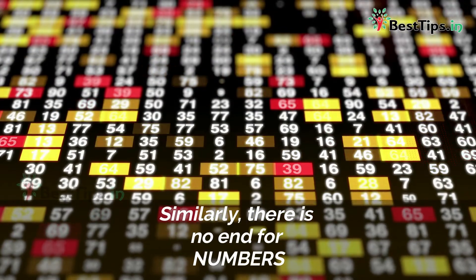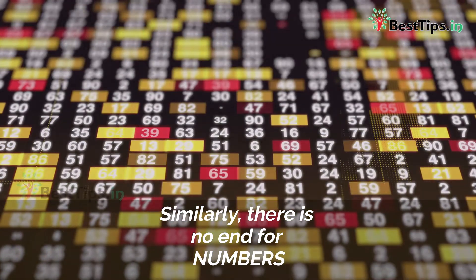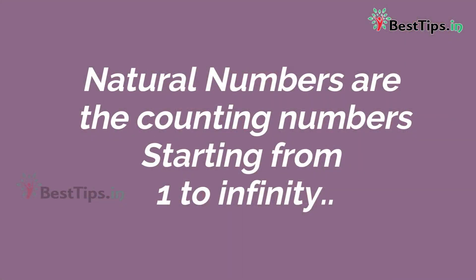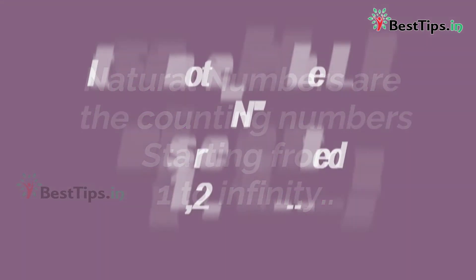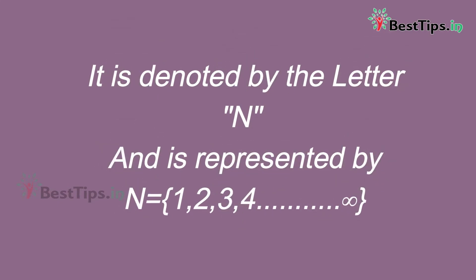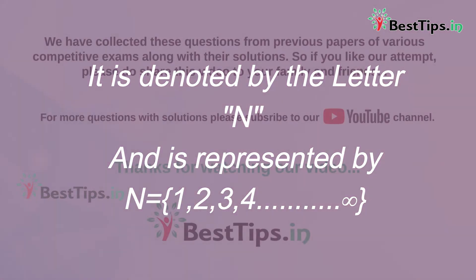Similarly, there is no end for numbers. So children, natural numbers are the counting numbers which start from 1 and go until infinity. We denote natural numbers with the letter N. And we write it as N is equal to a set of numbers starting from 1, 2, 3, 4 and so on till infinity.